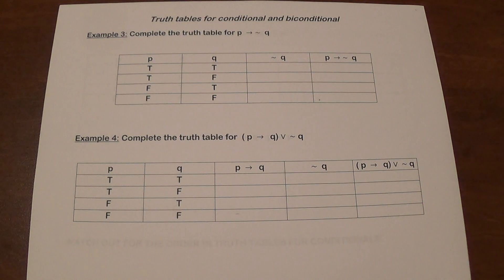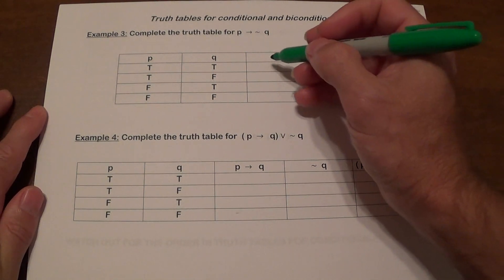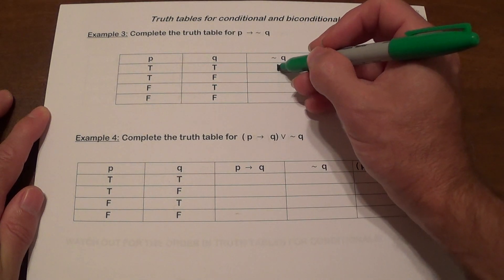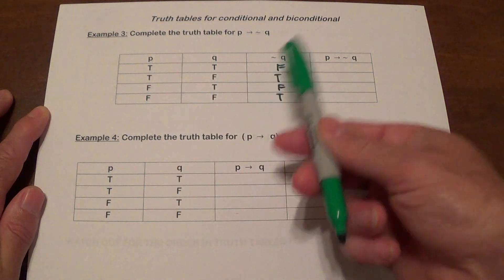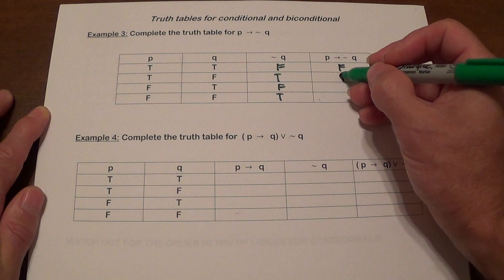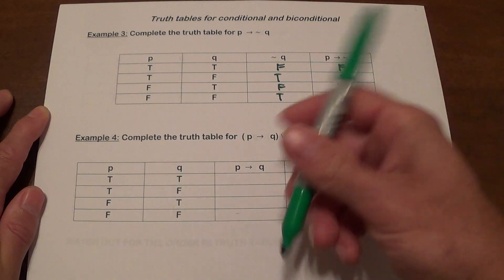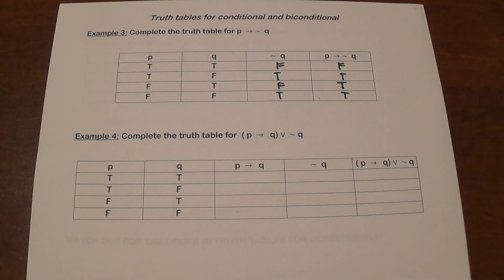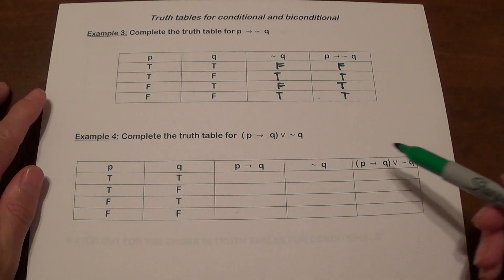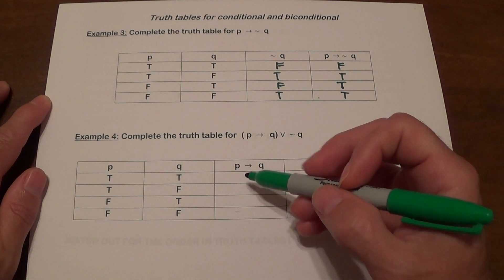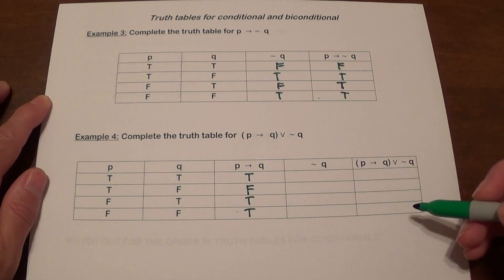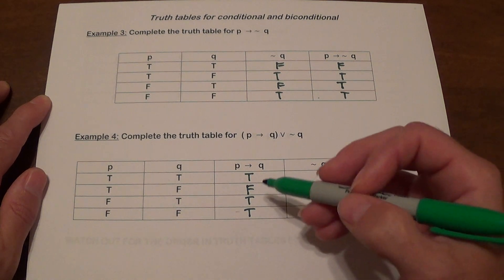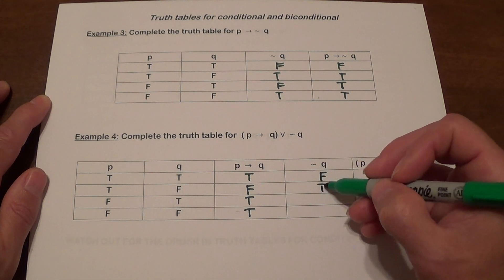Now let's do the truth table for P→¬Q. First, we compute ¬Q: false, true, false, true. Then for P→¬Q: true-false gives false, true-true gives true, false-false gives true, and false-true gives true.